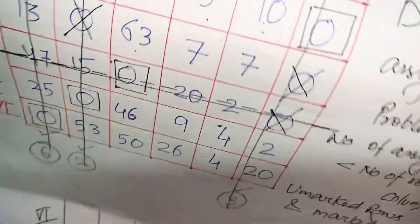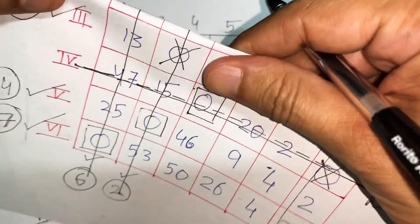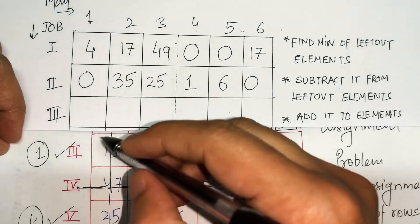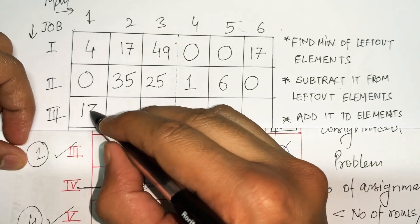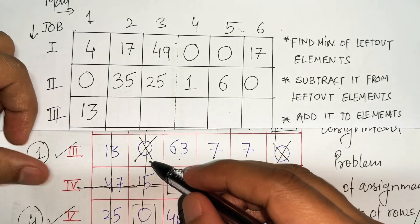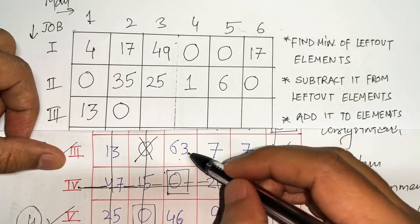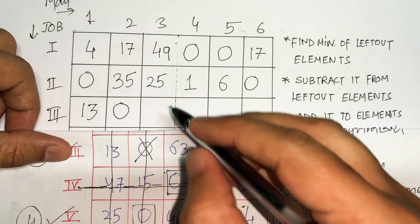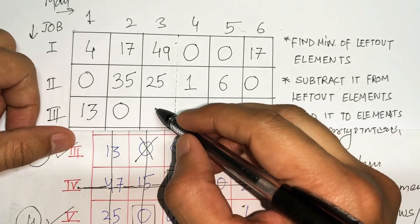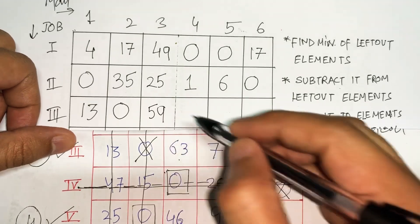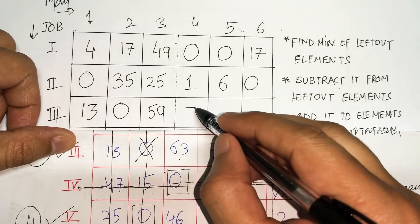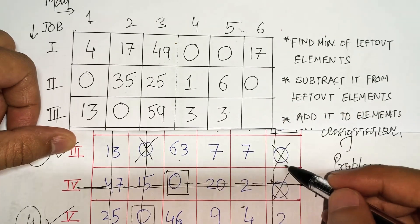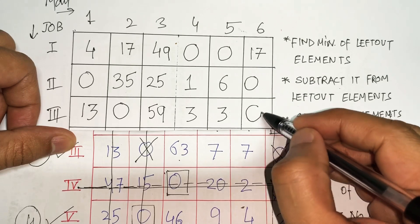Now the third row. 13 is on-line so it remains as it is; 0 is also on-line so it remains. 63 is a left-out element so 4 must be subtracted — giving 59. 7 is neither on-line nor on cross-section so 7 minus 4 is 3. This final 0 is on-line so it remains as it is.